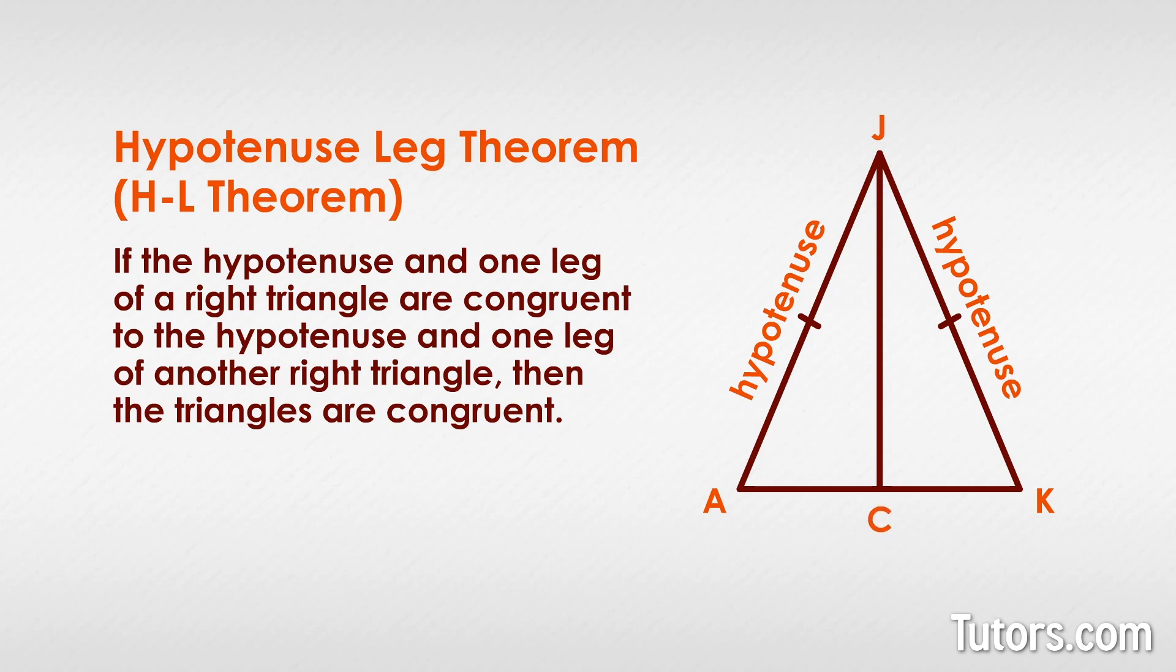That altitude, JC, complies with the isosceles triangle theorem, which makes the perpendicular bisector of the base the angle bisector of the vertex angle. We have two right angles at point C, angle JCA and angle JCK. We have two right triangles, triangle JAC and triangle JCK, sharing side JC.